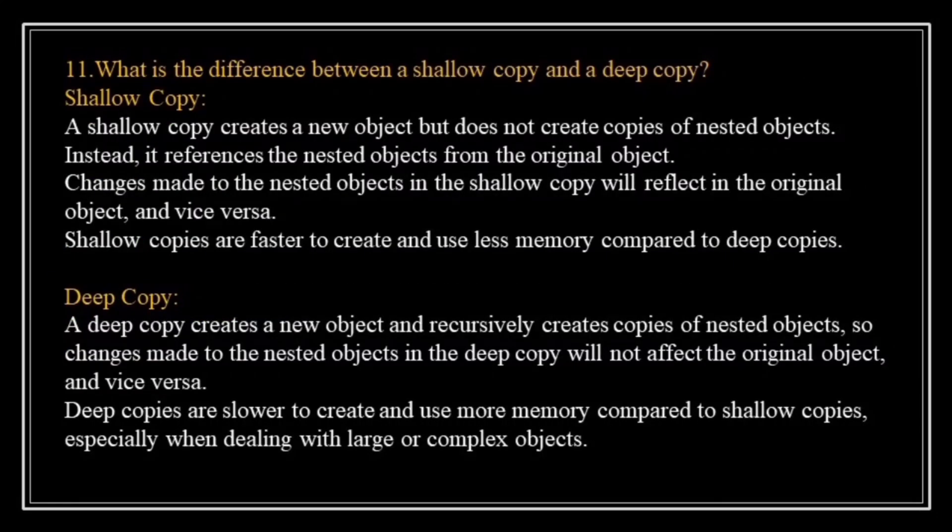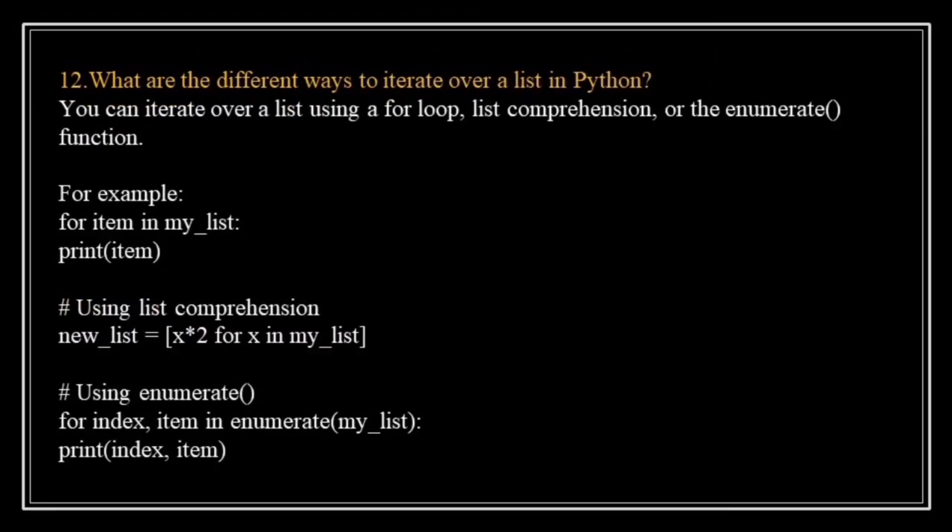What is the difference between shallow copy and deep copy? A shallow copy creates a new object but shares references to nested objects — changes to nested objects affect the original. Shallow copies are faster to create and use less memory compared to deep copies. A deep copy creates a new object and recursively creates copies of nested objects, so changes made to nested objects will not affect the original object. Deep copies are slower than shallow copies.